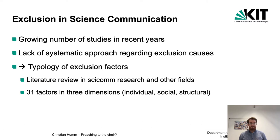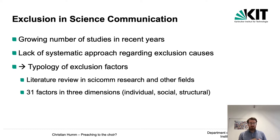Thus, my colleagues Philippe Schrögel and Annette Lesmermann and me developed a typology of exclusion factors in science communication. Through a systematic literature review in science communication research and other fields like disability studies, adult education, or political science, we were able to identify and describe 31 factors. We split them into three dimensions: individual, social, and structural factors.